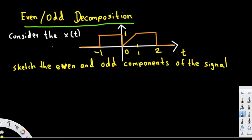What's going on guys? Here we are going to take a look at even or odd decomposition. We have the signal x(t) provided, and the question is asking us to sketch the even and odd components of the signal.